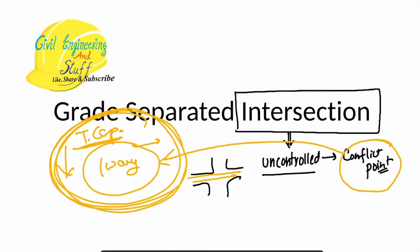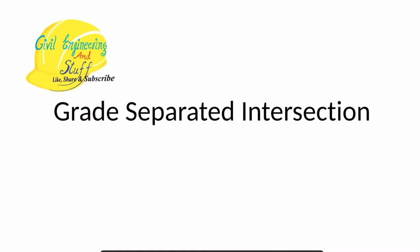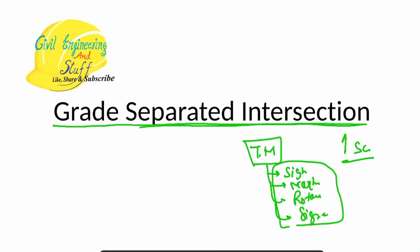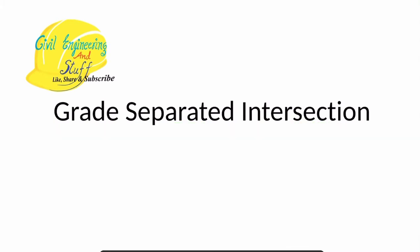To ensure that road capacity is at its maximum and the safety of road users is also taken care of, we install certain traffic management devices. These devices can include installation of traffic signs, road markings, construction of a rotary, or installing traffic signals. Another strategy to ensure smooth movement of traffic is by constructing a grade separated intersection, which is what we are going to discuss in this video.